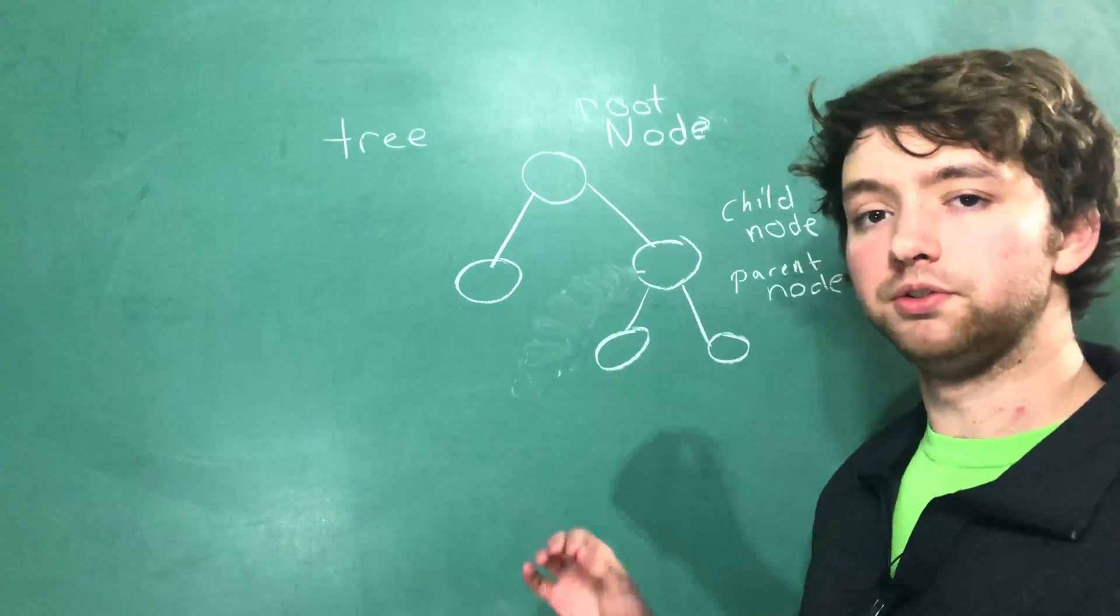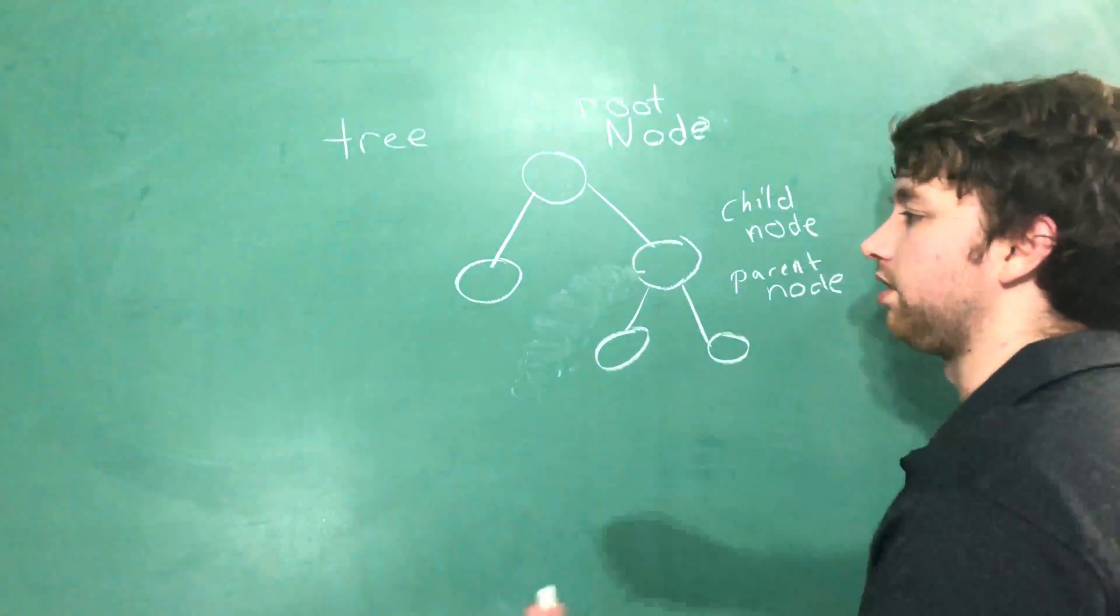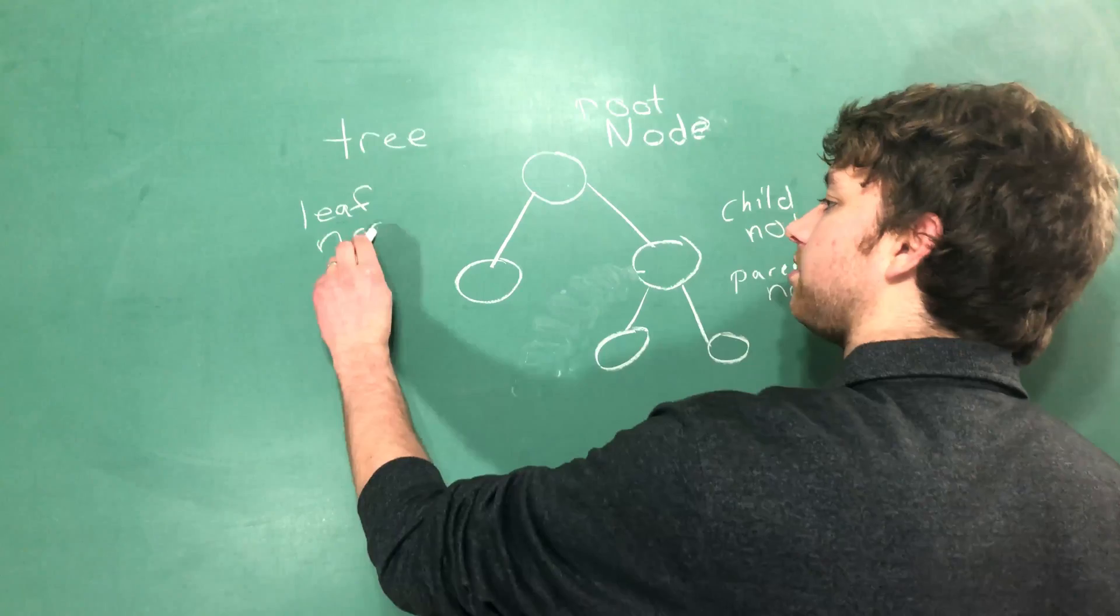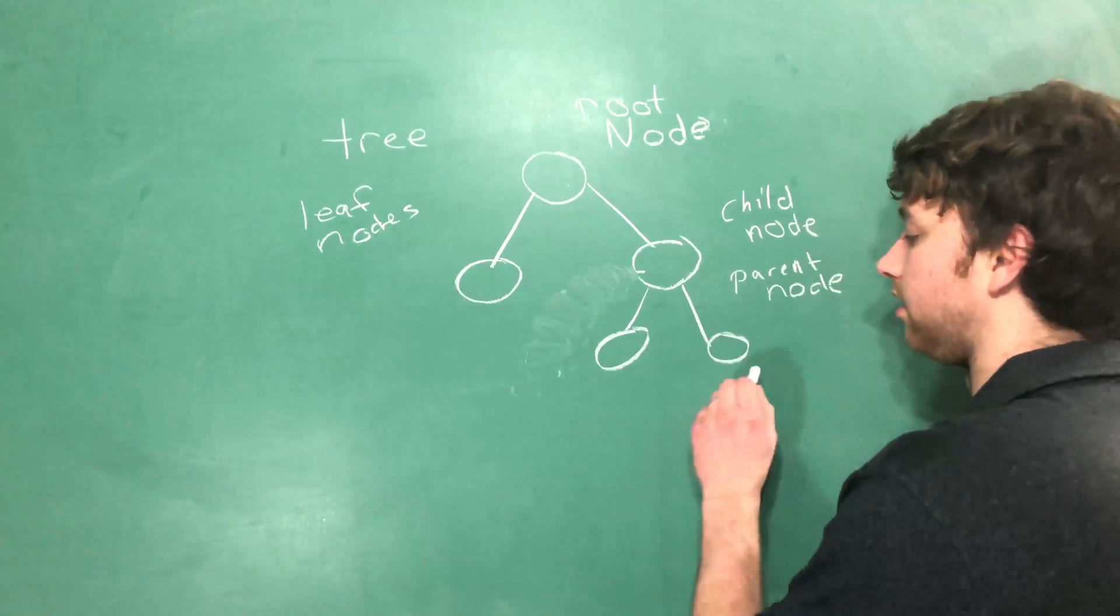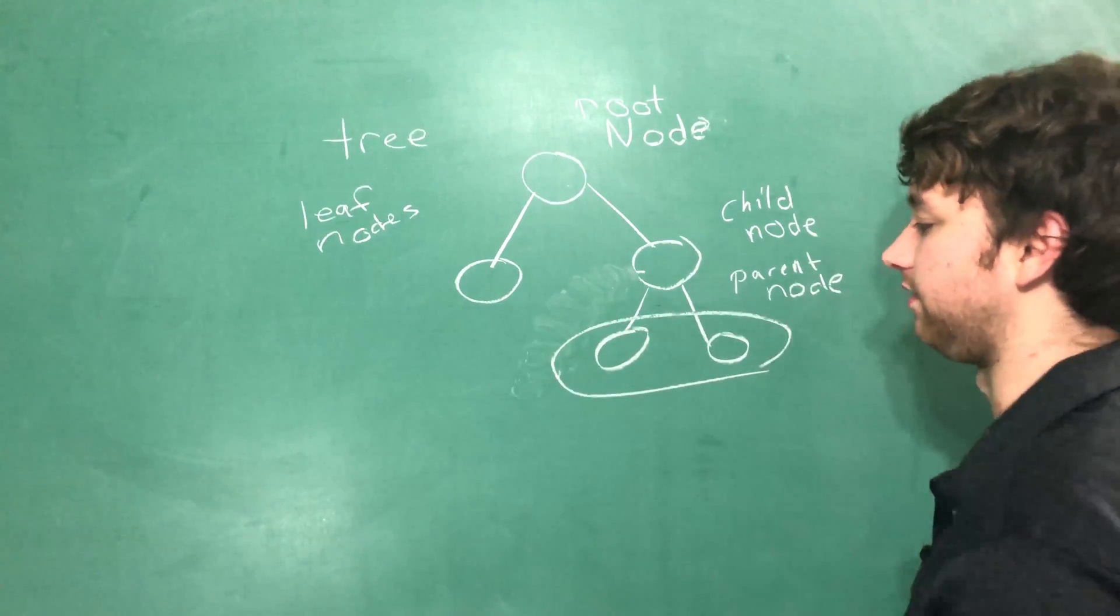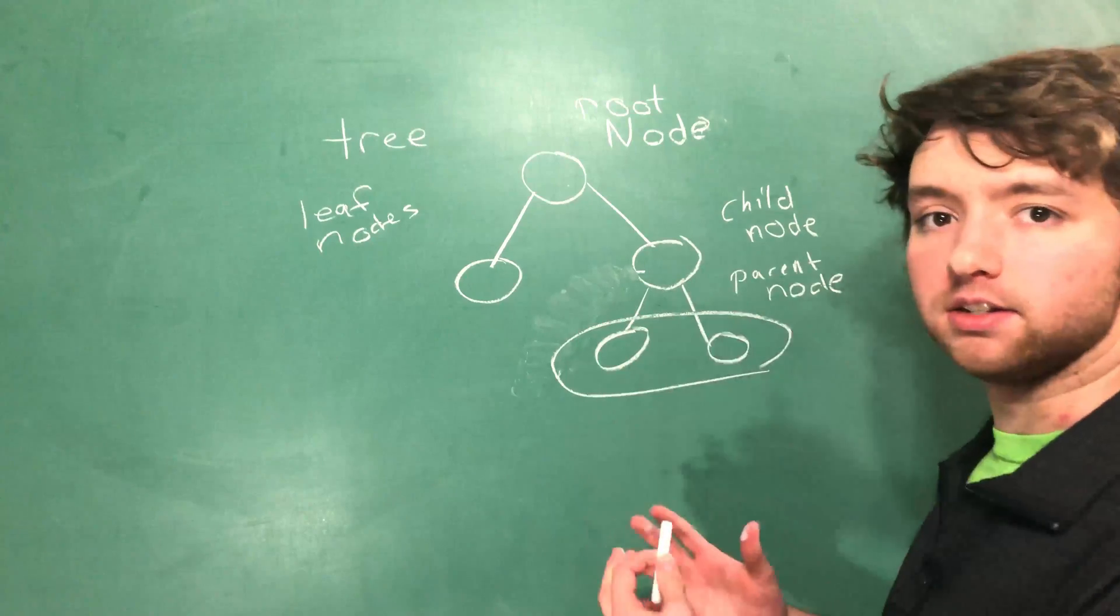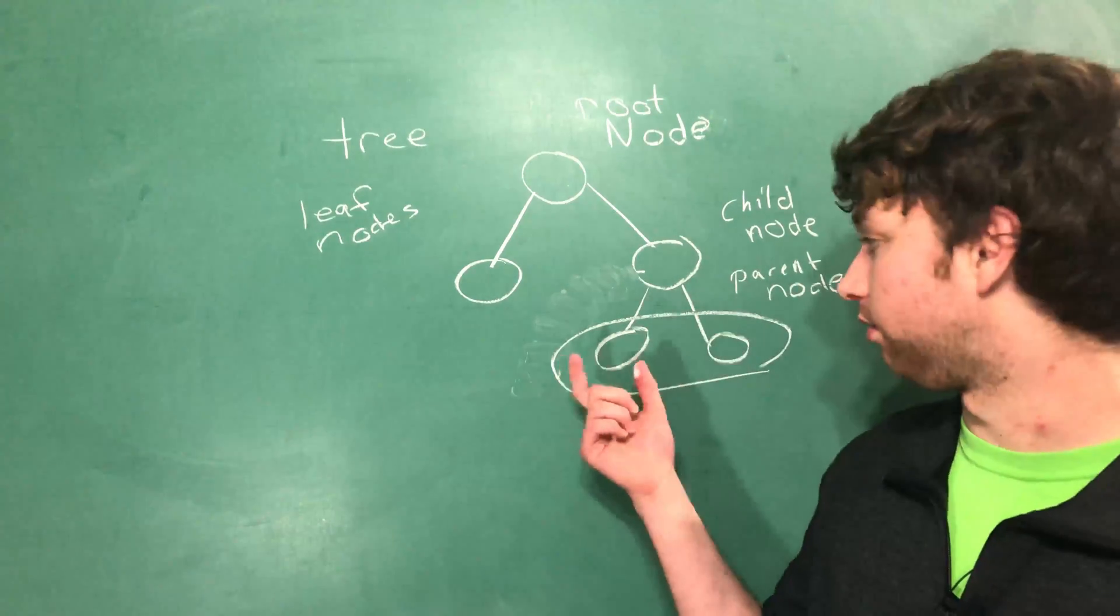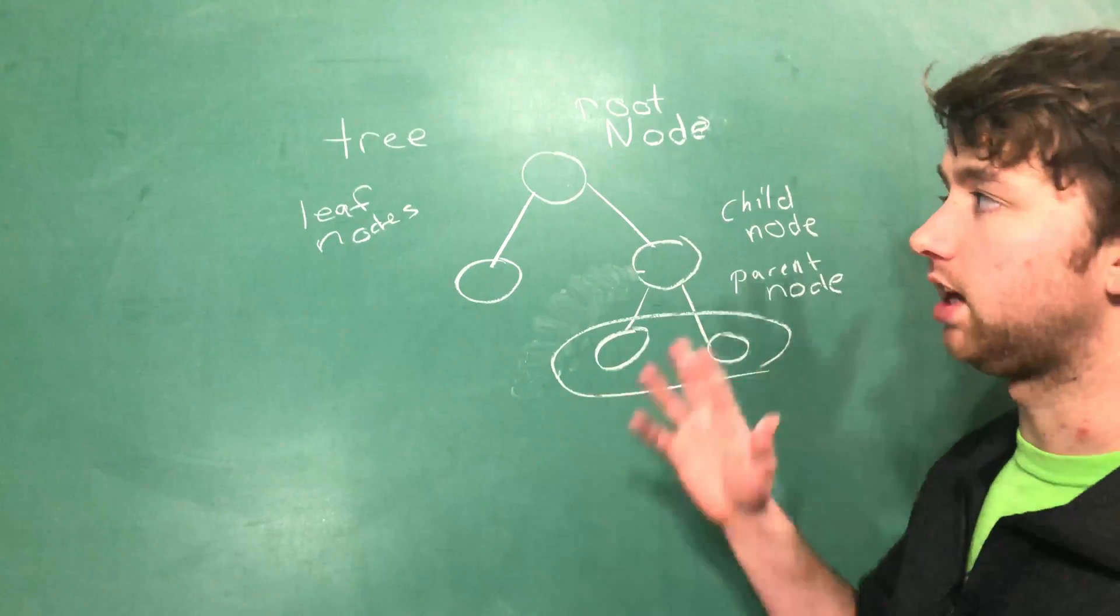Probably the most important nodes in this tree are what are known as leaf nodes. The leaf nodes are the nodes at the very end—in this case, these are the leaf nodes. The leaf nodes are the end of the tree and usually contain the information we are looking for.